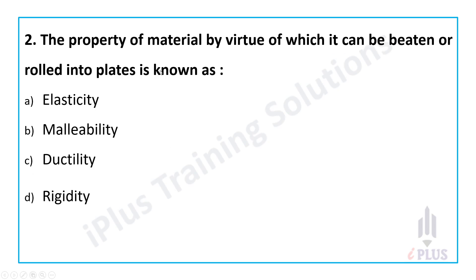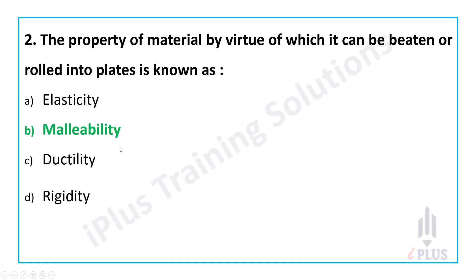Second question: the property of a material by virtue of which it can be beaten or rolled into plates or sheets. Options: elasticity, malleability, ductility, rigidity. Here the material will be subjected to compressive loads.